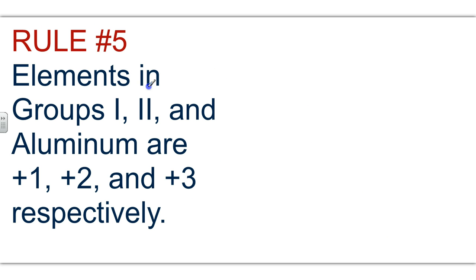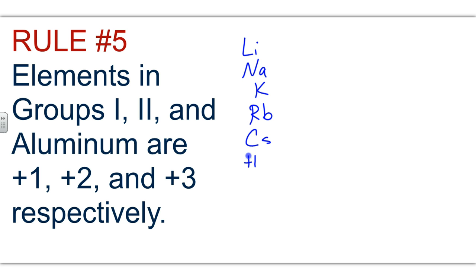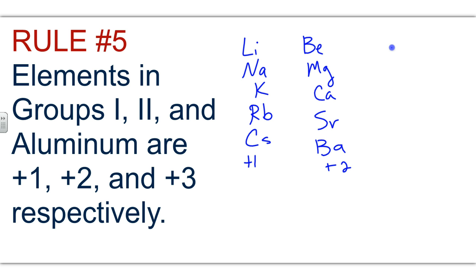Rule five: if an element is in group one, two, or three on the periodic table, their charges have to be plus one, plus two, and plus three respectively. So lithium, sodium, potassium, rubidium, and cesium all have to be plus one. Beryllium, magnesium, calcium, strontium, and barium all have to be plus two. And aluminum is always given a plus three.